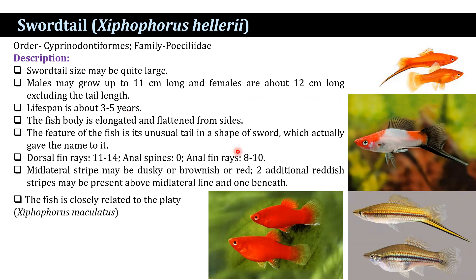The fish body is elongated and flattened from the sides. The distinctive feature of the fish is its unusual tail in the shape of a sword, which actually gives the name to it — swordtail fish. The tail may be either rounded with one ray, or it may have several rays.